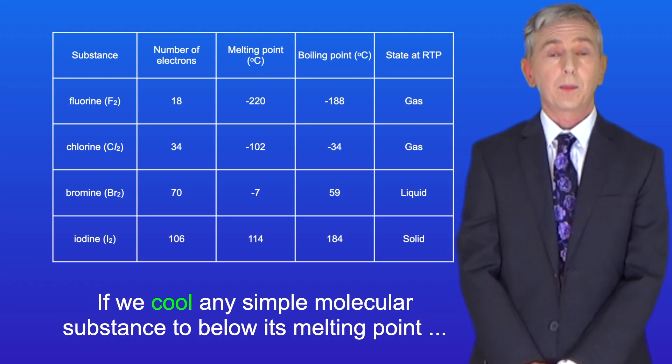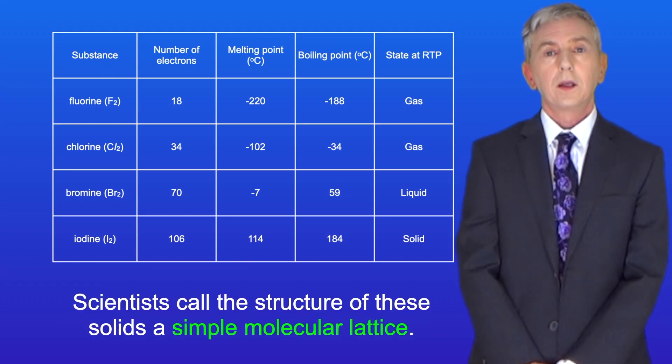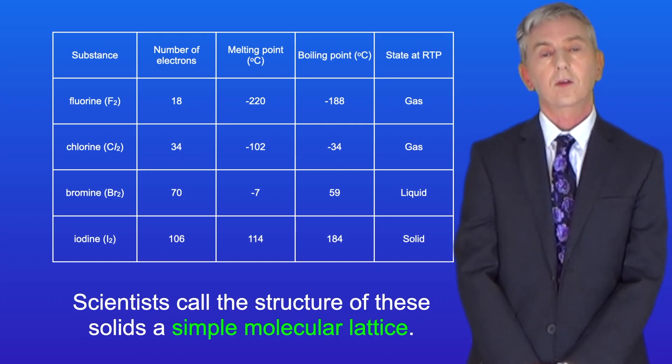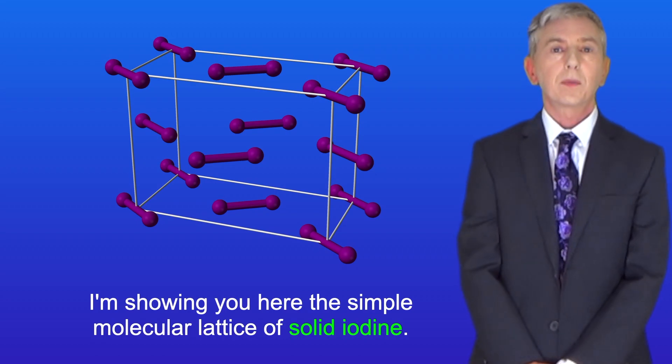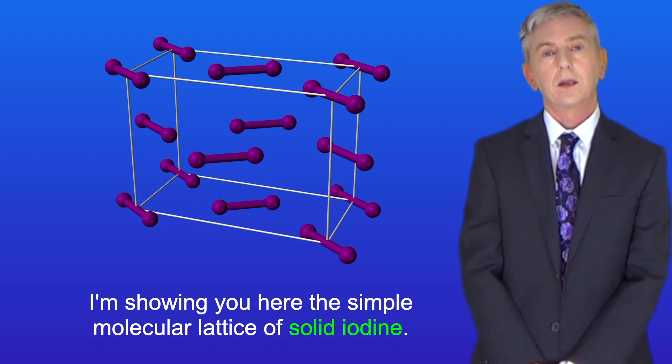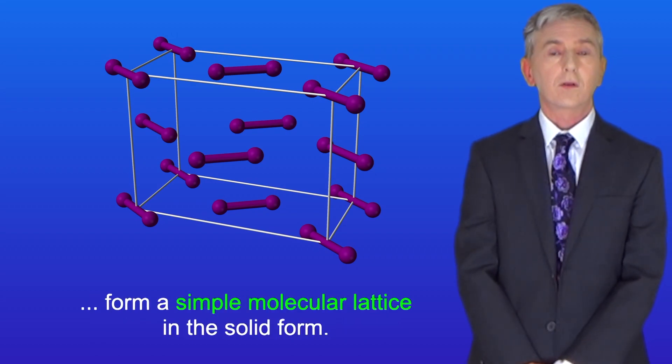Now if we cool any simple molecular substance to below its melting point then it will form a solid and scientists call the structure of these solids a simple molecular lattice. I'm showing you here the simple molecular lattice of solid iodine but I should point out that all the halogens form a simple molecular lattice in the solid form.